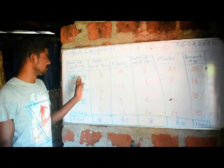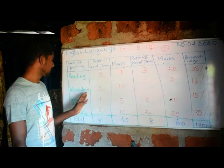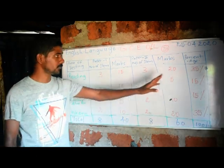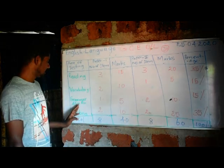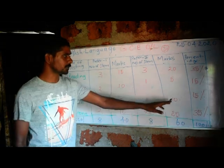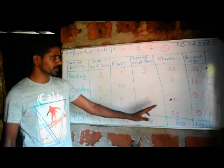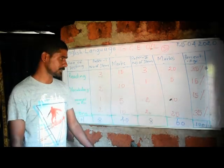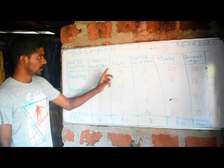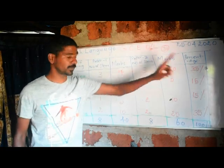In Paper 2, for reading there are 3 questions for 20 marks. Vocabulary has 1 question for 5 marks. Grammar and language functions has 2 questions for 10 marks. Writing has 2 questions for 25 marks.